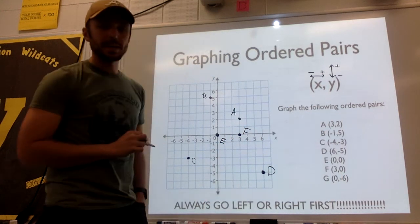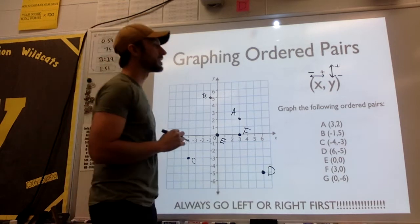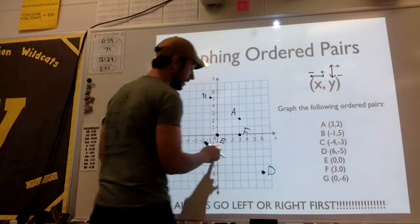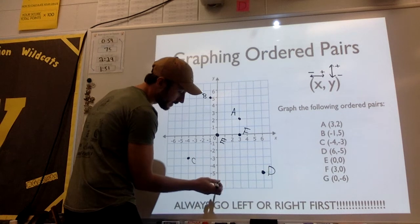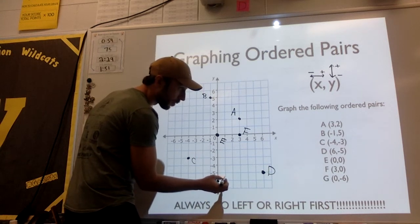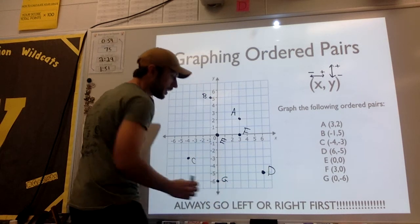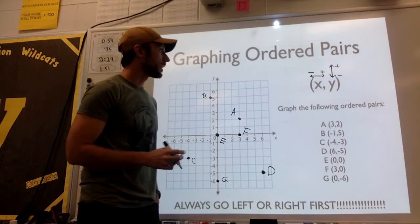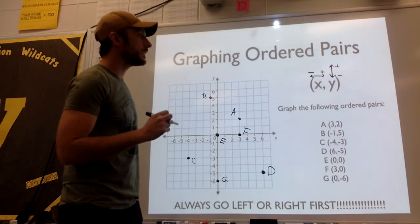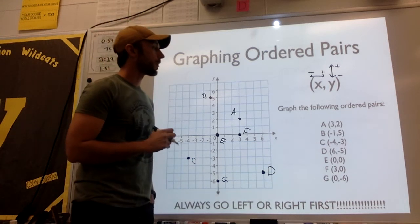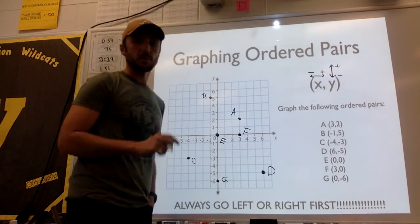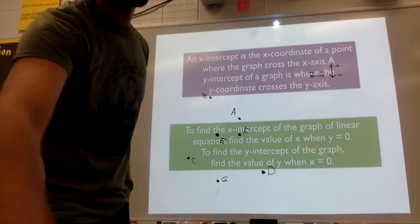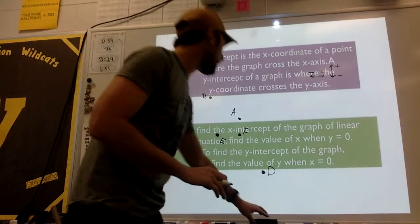Point G is located at (0, negative 6), so I move left or right 0, and down 6. And that would be point G. This, hopefully, is a review. We'll talk about it more as we do it, but hopefully it makes some sense at this point.